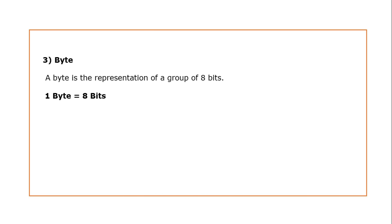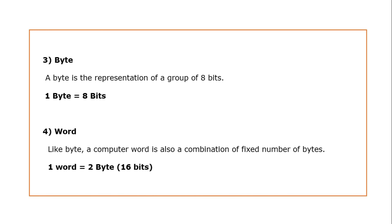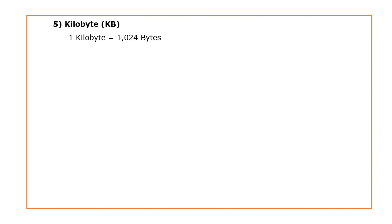As we saw previously, 4 bits is equal to 1 nibble. Like that, 8 bits is equal to 1 byte. The next memory unit is word. Like byte, a computer word is also a combination of a fixed number of bytes. So 1 word is equal to 2 bytes, that is 16 bits or 4 nibbles.